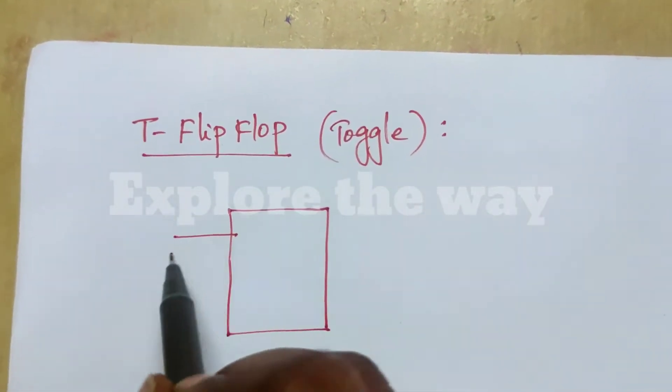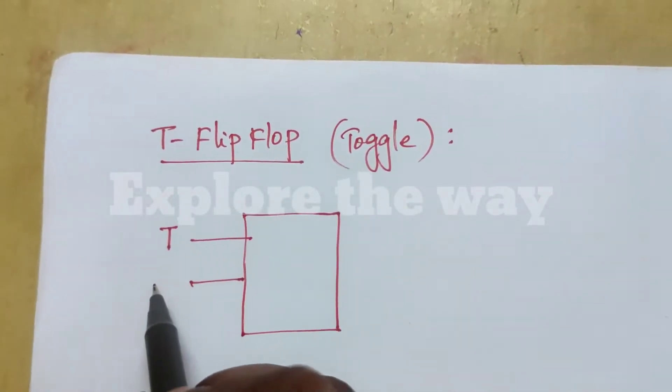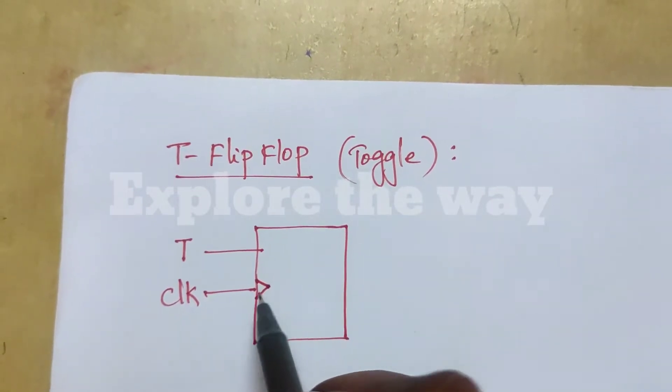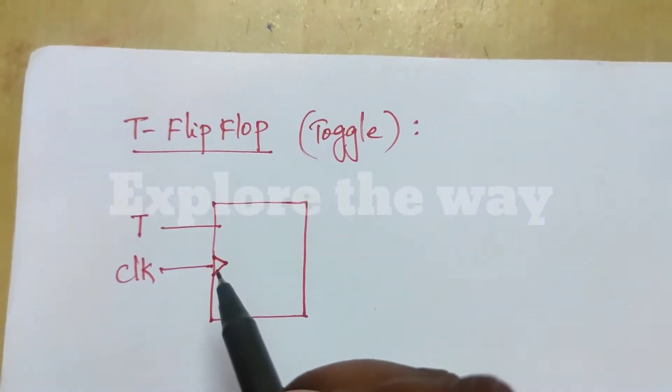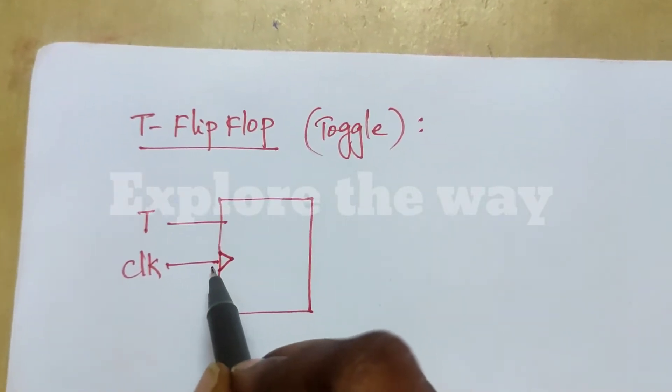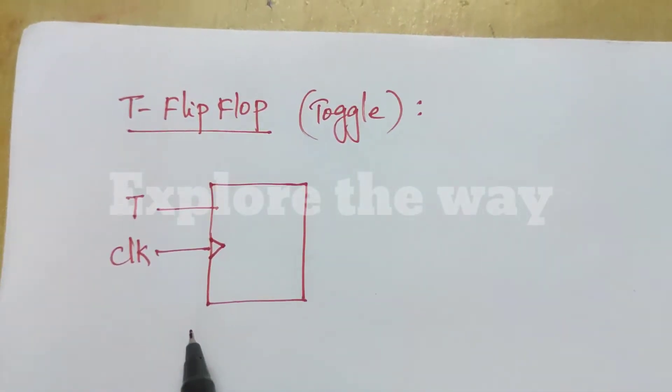T flip-flop has T input clock signal. This arrow indicates that it operates at the positive edge of clock. Suppose here an inverting bubble is there, that means it operates at negative edge of clock.